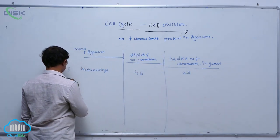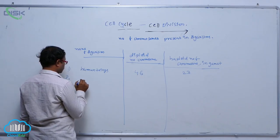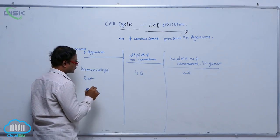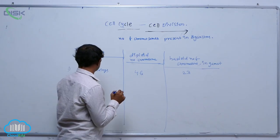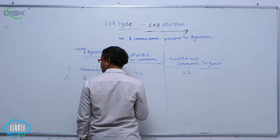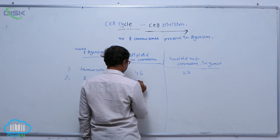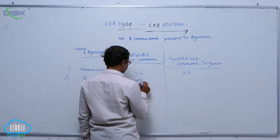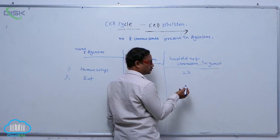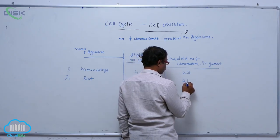After that, track. The diploid number of chromosomes is 42. The haploid number of chromosomes in the gamete is 21.